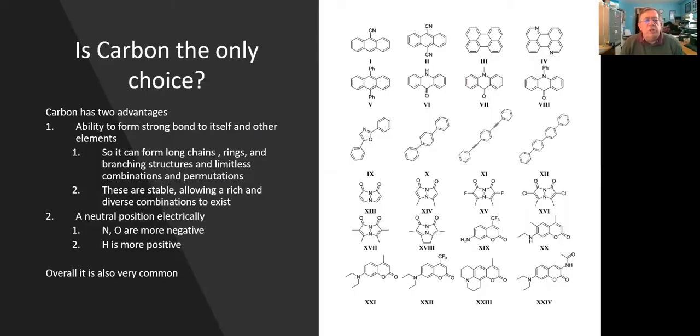He also asked the question: is carbon the only choice for making the framework of life? Carbon has advantages for doing this, really illustrated by the picture of loads of different carbon molecules on the right hand side. It can bond to itself very strongly and to other elements very well, and form long complicated chains and branching structures that lead to huge diversity. It's also electrically fairly neutral, which means you can modify its behavior by adding more negative or more positive elements. So what about other elements? Can they do that too?